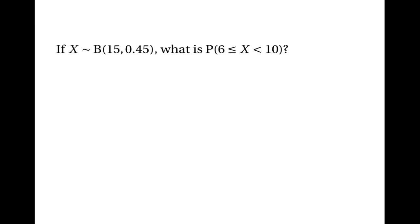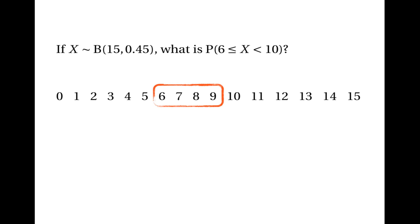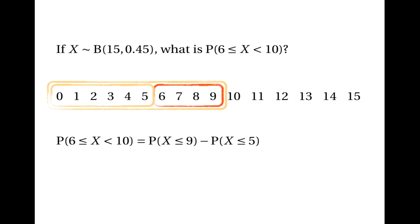Here's another example. This time we've got a binomial distribution, again with 15 trials, but the probability of success is 0.45. We're going to work out the probability that X is greater than or equal to 6 and less than 10. X could be 6, 7, 8 or 9 — that's all numbers from 0 up to 9, except for 0, 1, 2, 3, 4 or 5. So the probability that X is greater than or equal to 6 but less than 10 is the probability that X is less than or equal to 9 minus the probability that it's less than or equal to 5.